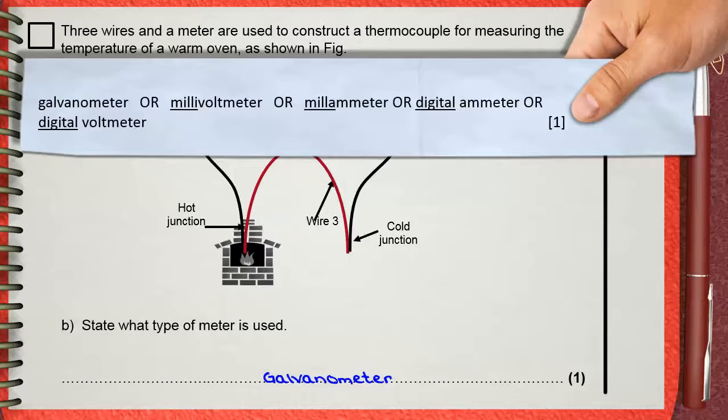Part B: galvanometer or millivoltmeter, or millammeter or digital ammeter, or digital voltmeter. All these are sensitive to small amounts of voltage and current.